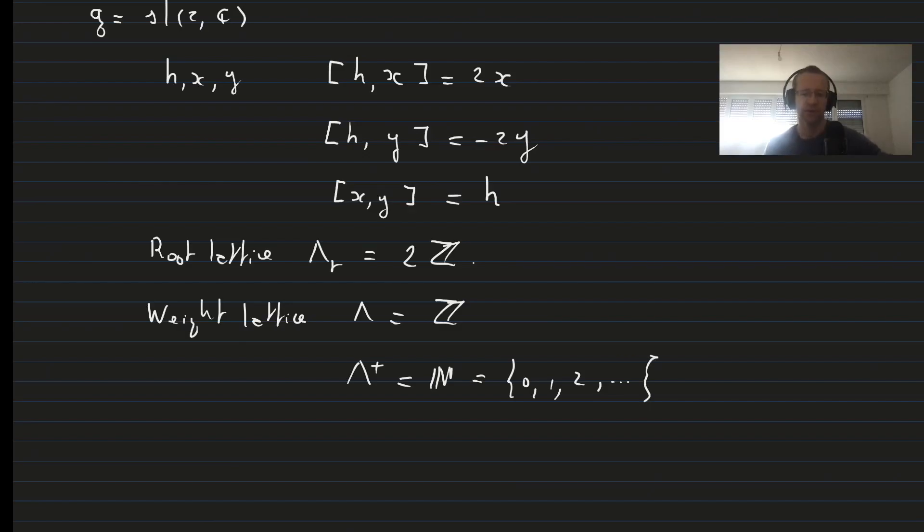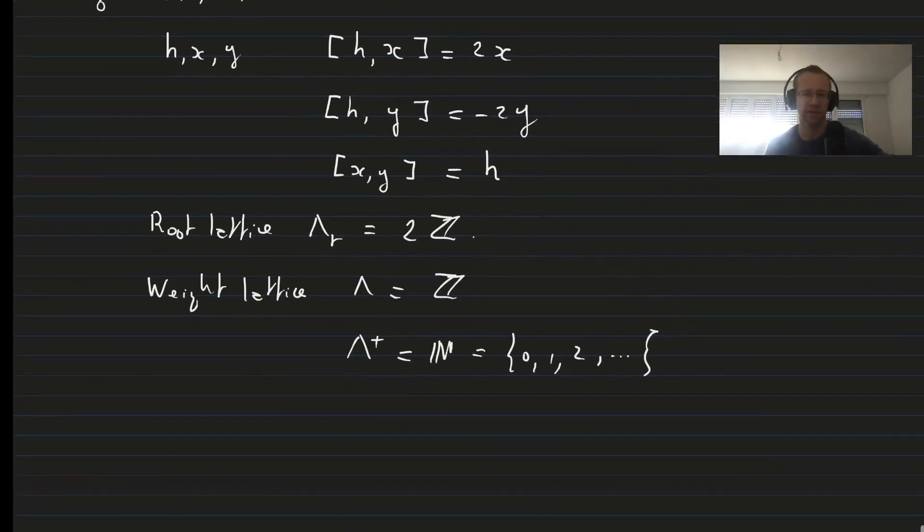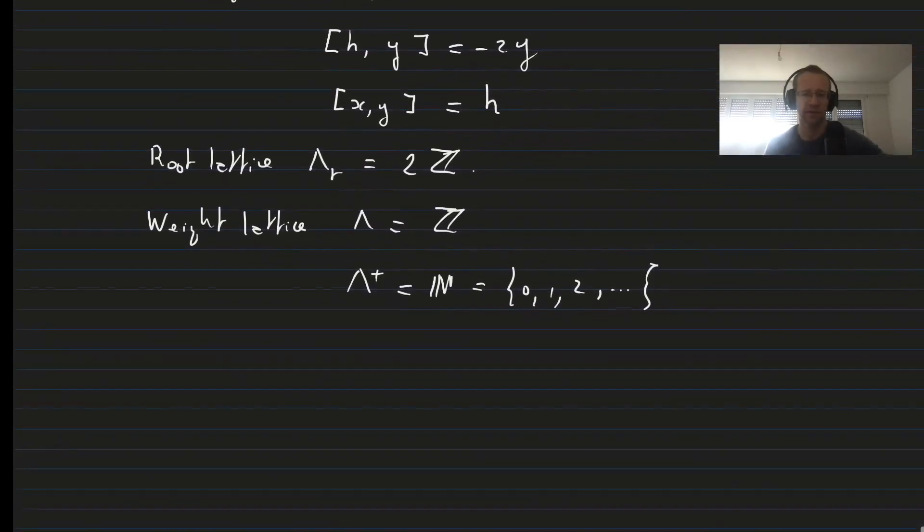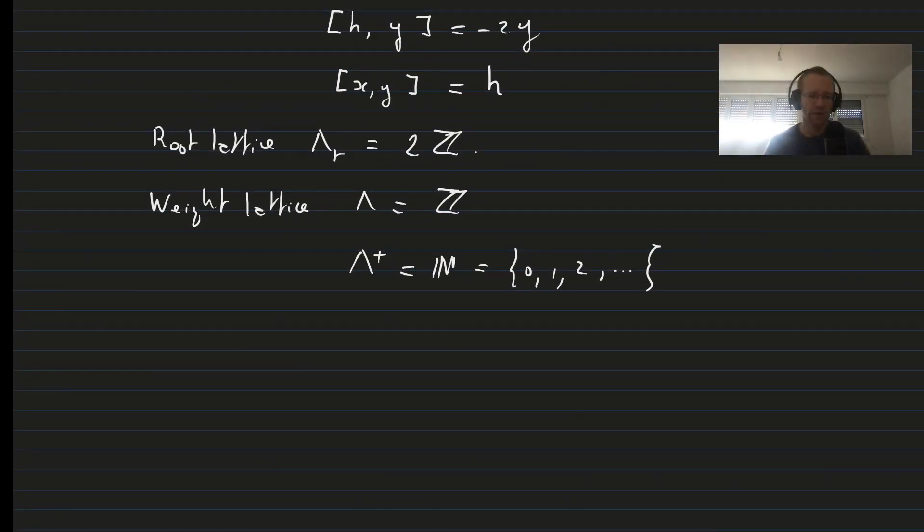So these are the basics of complex Lie algebra representation theory and root lattice theory, which are supposed to be known. So for each dominant highest weight, we have a simple module or an irreducible representation of the Lie algebra.